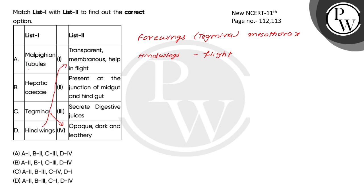And then Malpighian tubules and Hepatic Caeca. Hepatic Caeca are found at the foregut and midgut junction — they secrete digestive juice. Malpighian tubules are present in the mid gut and hind gut, and they help the body remove waste. So the correct match for Malpighian tubules is waste removal.